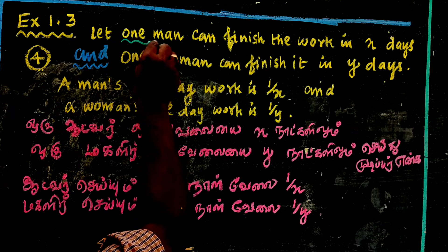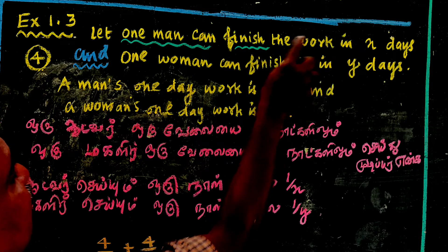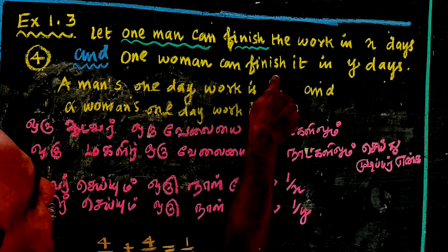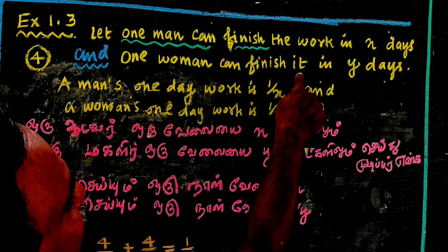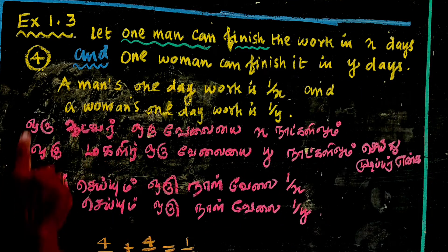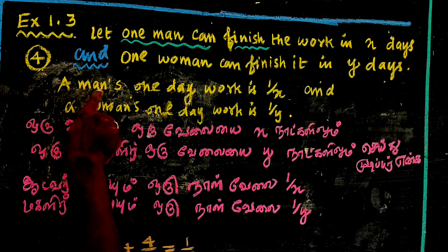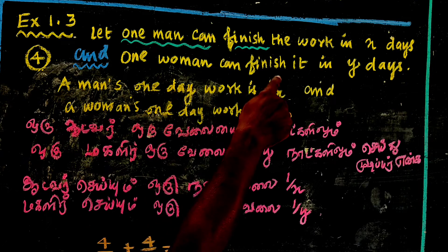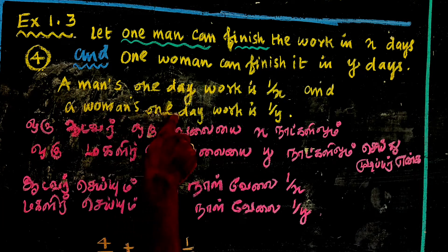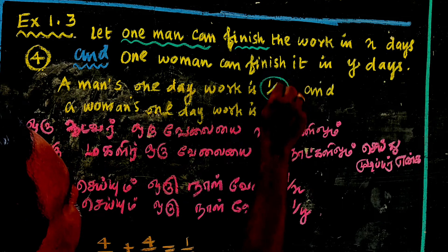Let one man finish the work in X days and one woman finish the work in Y days. Then a man's one day work is 1 by x, and a woman's one day work is 1 by y.